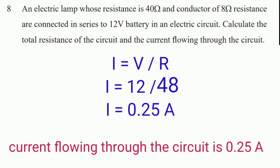To find the current flowing through the circuit, use I = V / R. V = 12 volts and R = 48 ohms, so I = 12 / 48 = 0.25 amperes. Therefore, the current flowing through the circuit is 0.25 amperes.